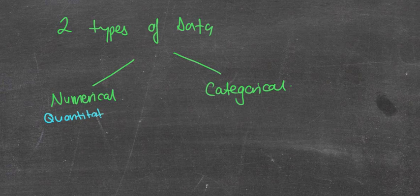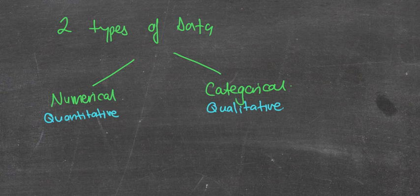Now our numerical data can also be called quantitative data, where categorical can also be called qualitative data. So how do you remember the differences? Well, quantitative kind of sounds like quantity, which is numerical.